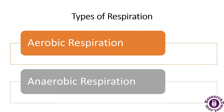In aerobic respiration, water and carbon dioxide are produced as end products. Anaerobic respiration is a process that takes place in the absence of oxygen. In this process, energy is obtained by the breakdown of glucose in the absence of oxygen. A classic example of anaerobic respiration is fermentation in yeast.